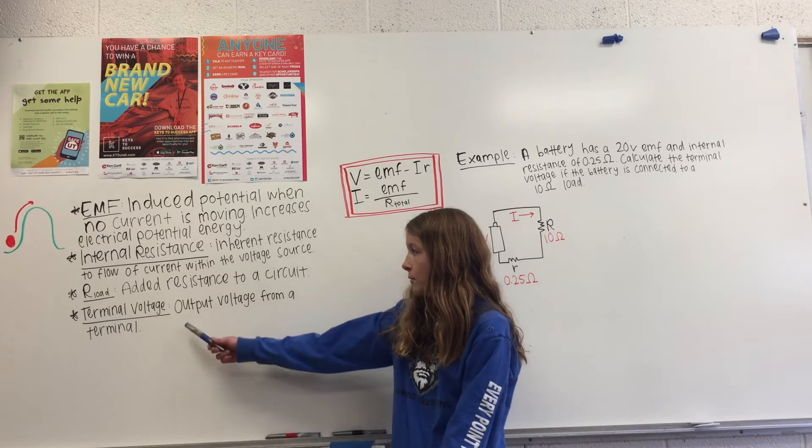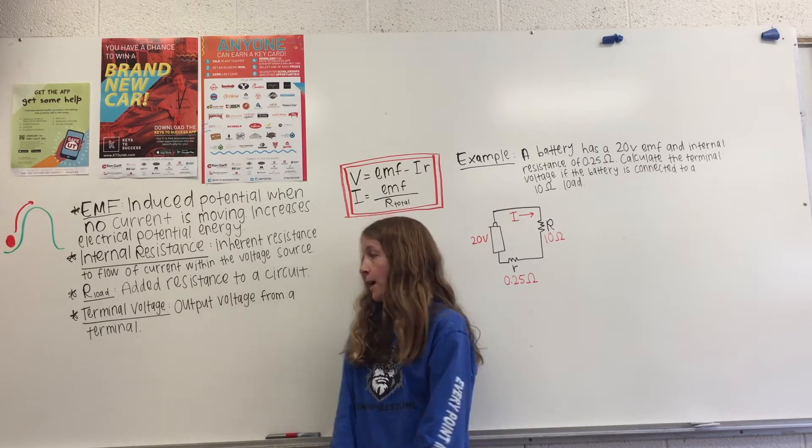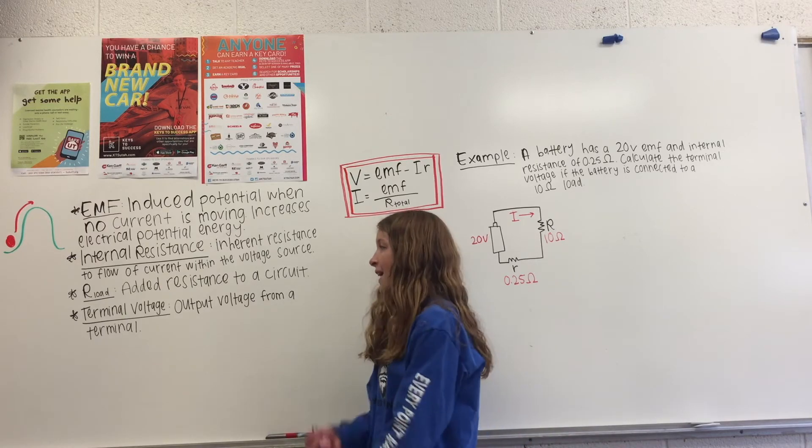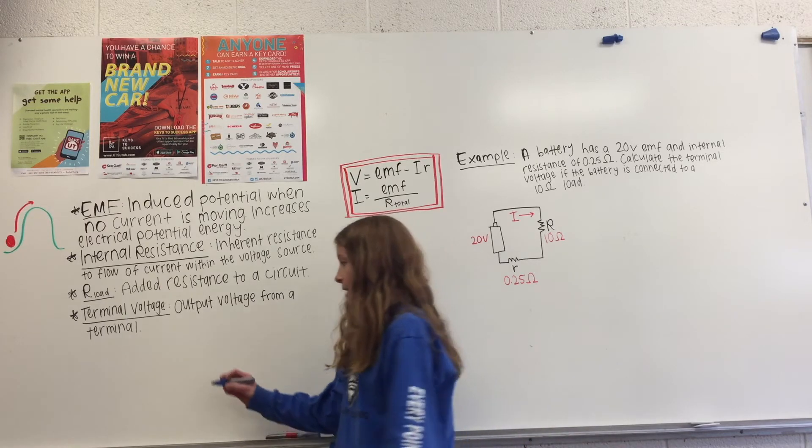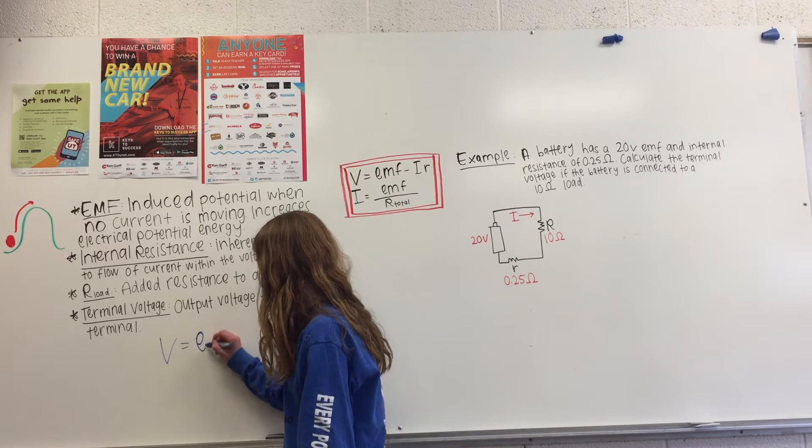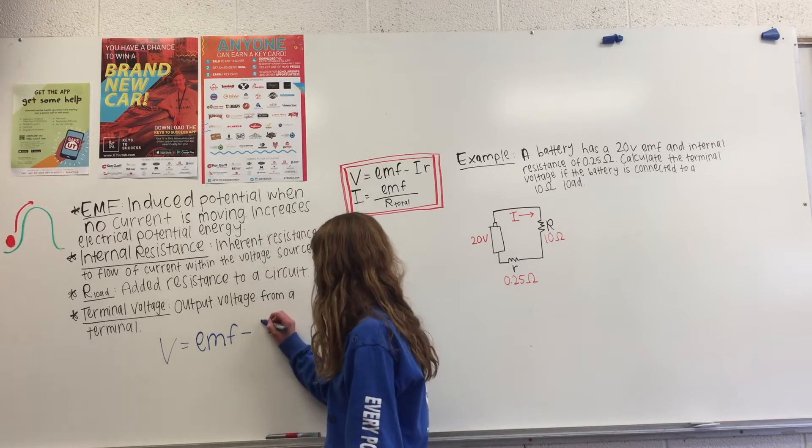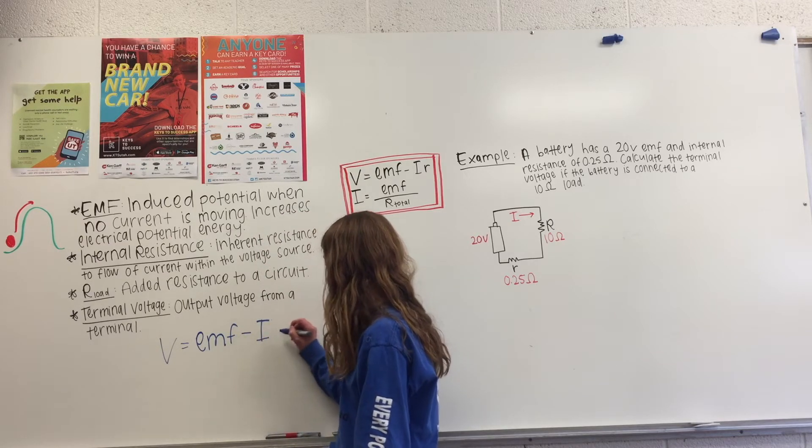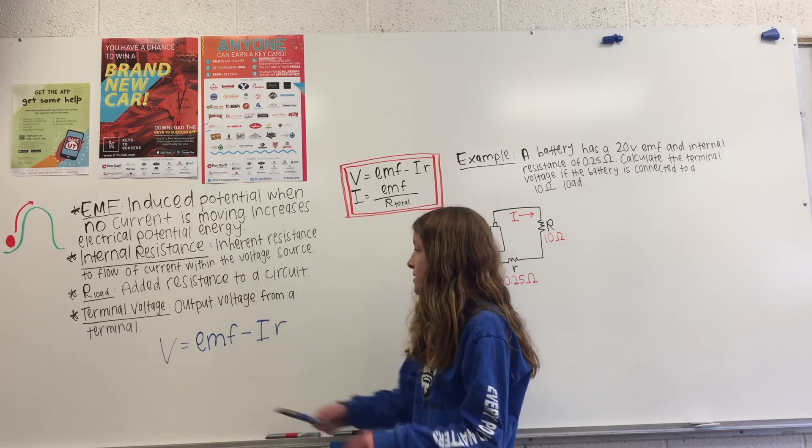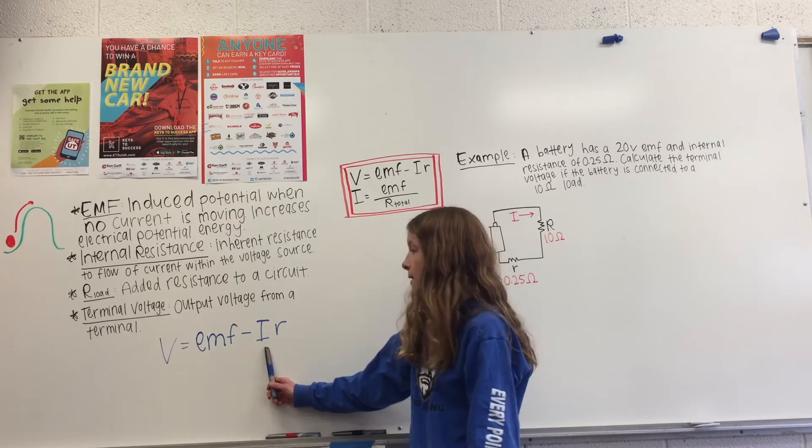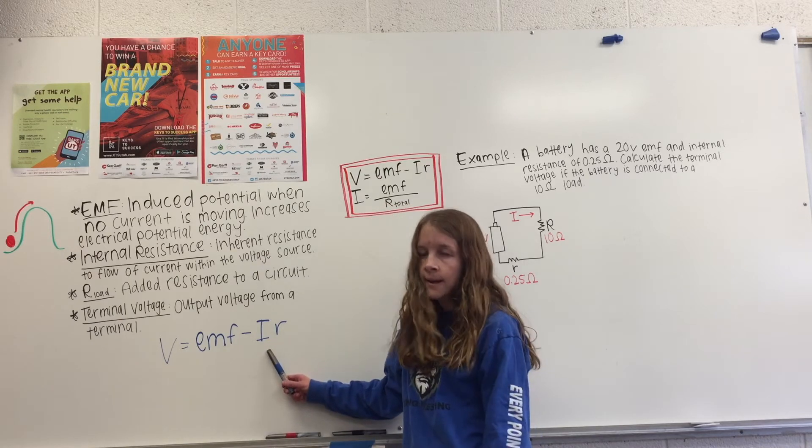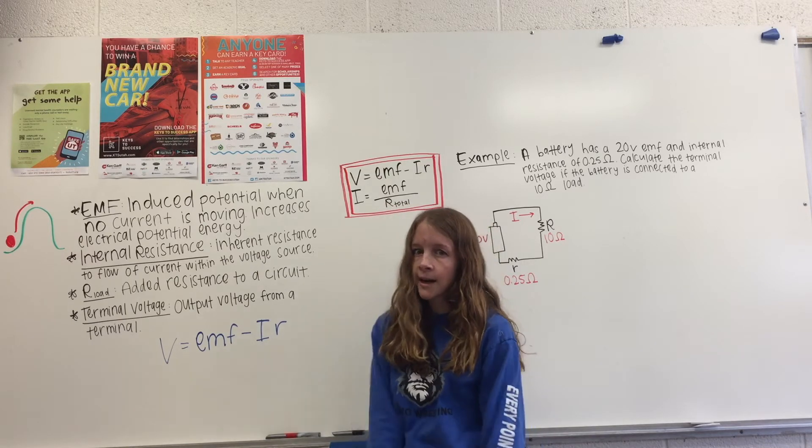And then lastly, we have terminal voltage, which is the output voltage from a terminal. So it's what is actually being outputted. This can be defined in equation, which we have V equals our EMF minus our current, or I, times little r, which is our internal resistance. And so we'll notice that if there's no current flowing, then our EMF is going to equal our terminal voltage. But once there's current going, our terminal voltage is going to be less than our EMF.